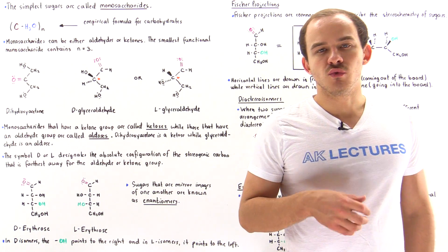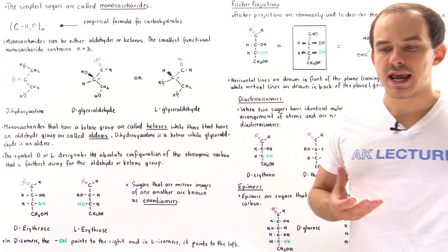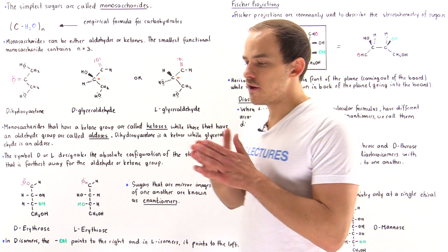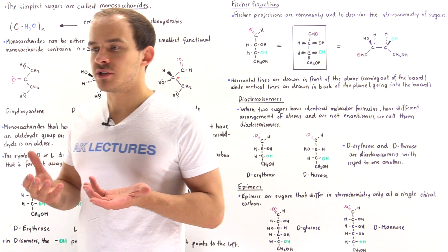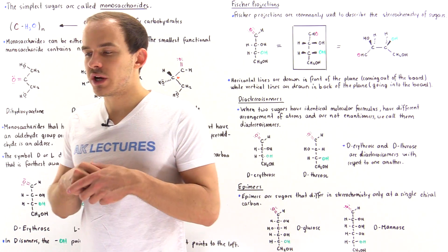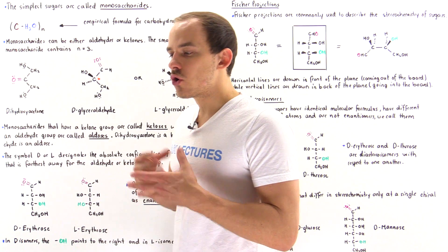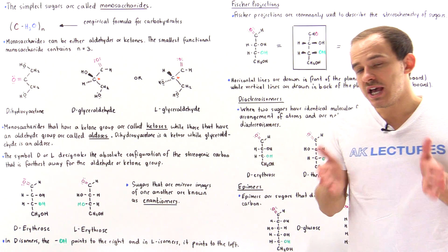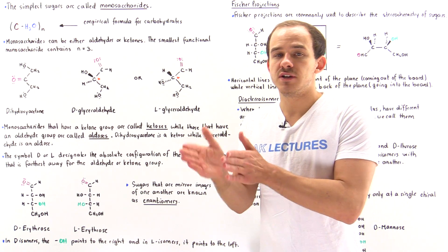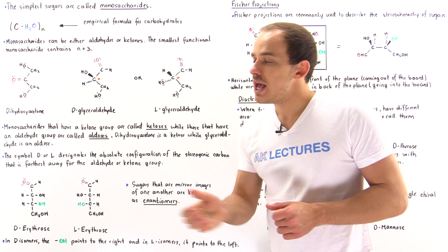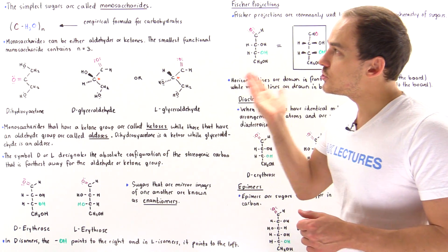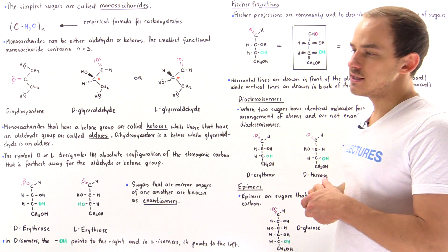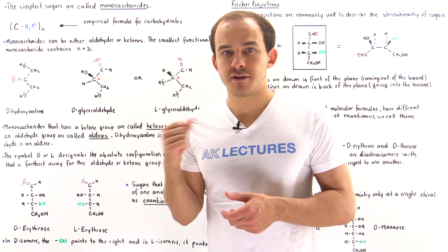Carbohydrate molecules vary in length, so some are very long and some are very short. Long carbohydrate molecules are also known as polysaccharides because they consist of many individual monosaccharides. The simplest sugars are called monosaccharides — they consist of a single sugar monomer.